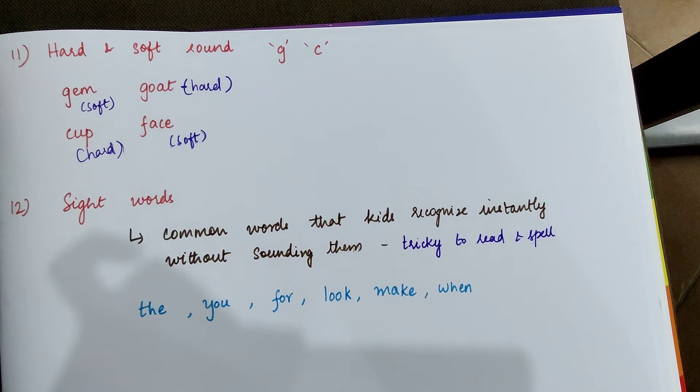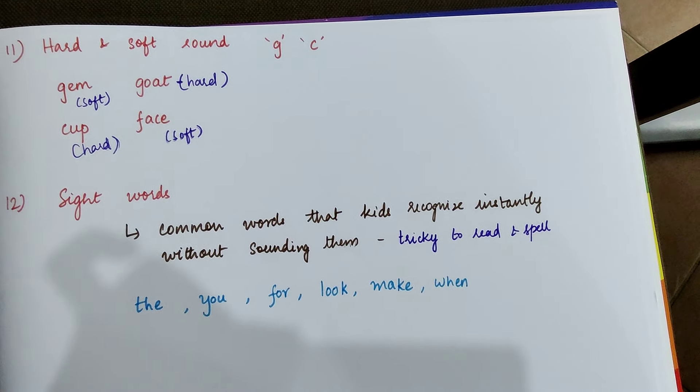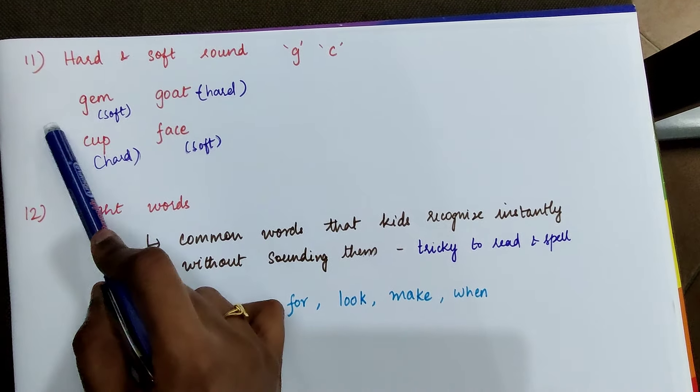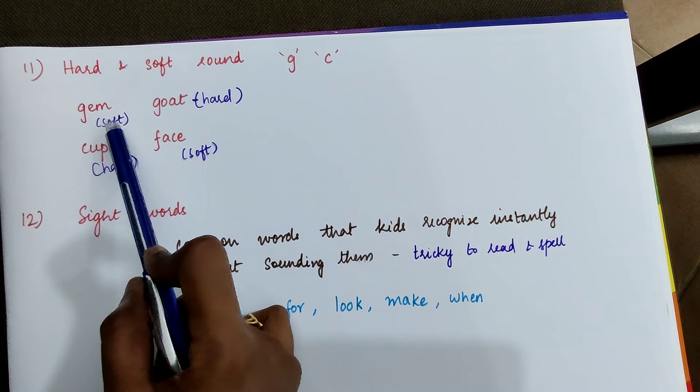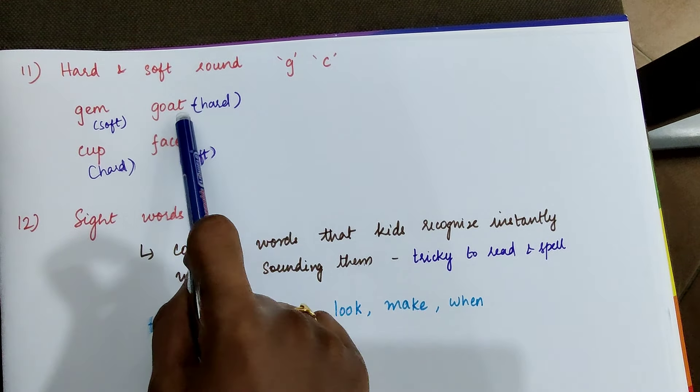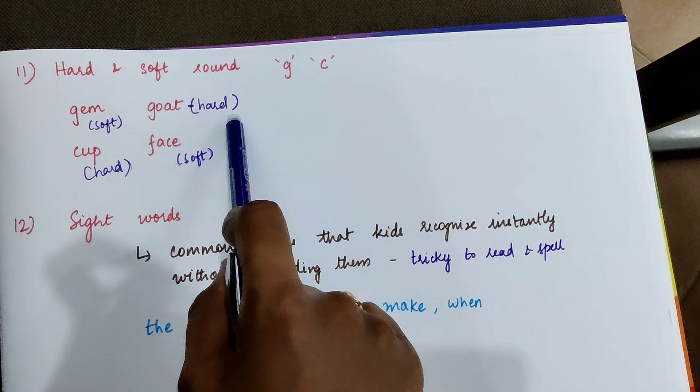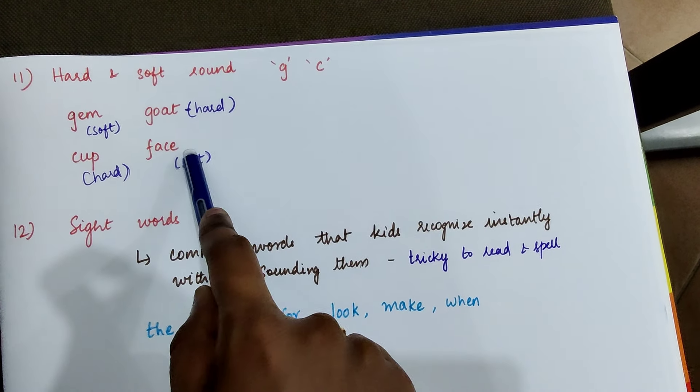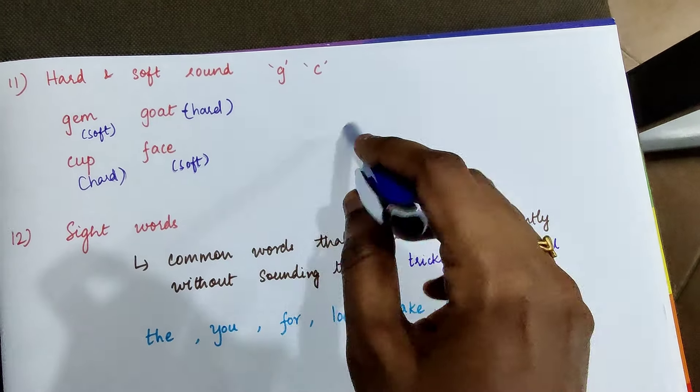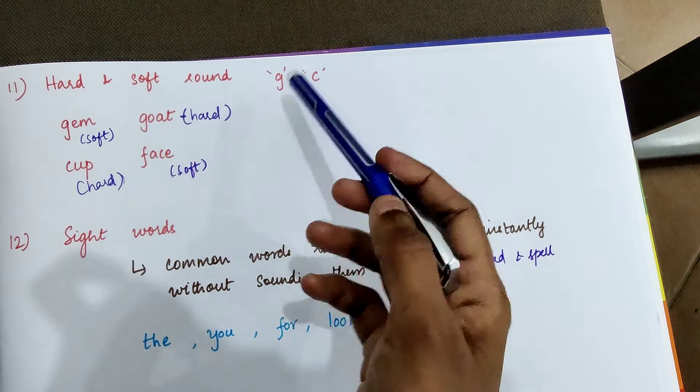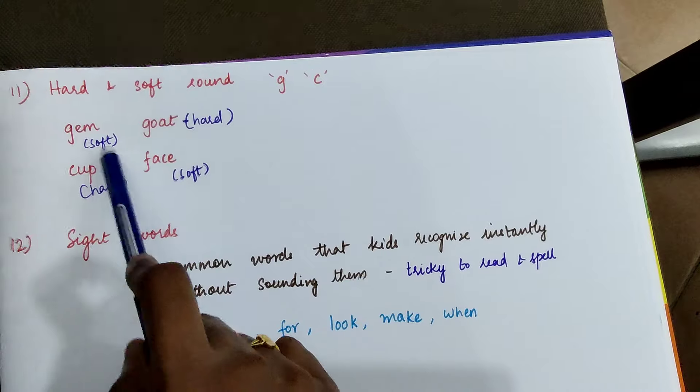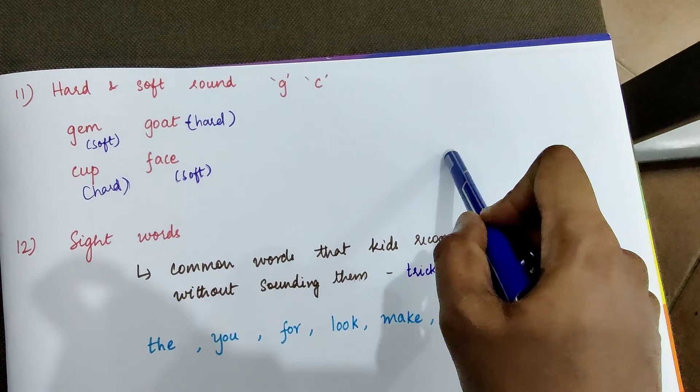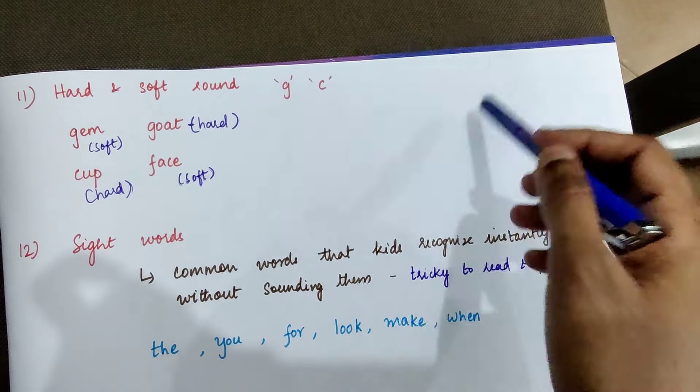The next topic is hard and soft sound rule. G and C. Each of them have two different sounds, soft and hard. Example, in the word gem the g sound is j which is soft. In the word goat it's g which is hard. Cup, k hard. Face, s soft. So we have some rules like where we need to use the soft and in which word we have to use the hard. So those rules I will add a separate video and I will go in detail in that video.